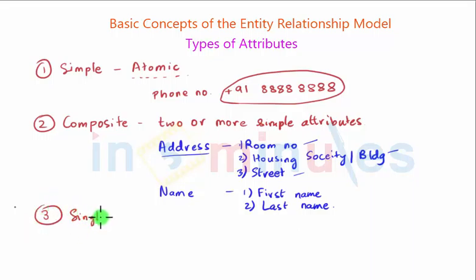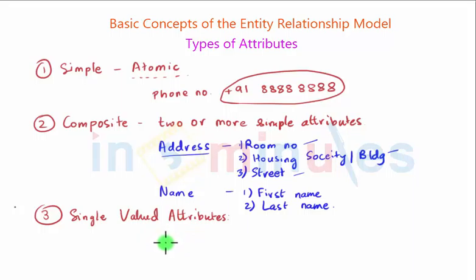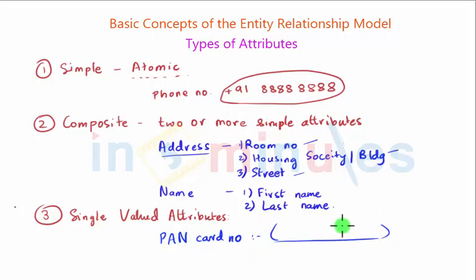The third type of attribute is single valued attributes. Single valued attributes are those attributes which can just have one value. Now you might be confused between simple and single valued. The difference is simple attributes cannot be broken down into sub-attributes. However, when I say single valued attributes, they just have one value — they cannot be a list of values. If you want to store a list of values, we can use multi valued attributes, which we will be coming to soon. For example, the PAN card number of a person can just have one specific value, say something like an alphanumeric number.